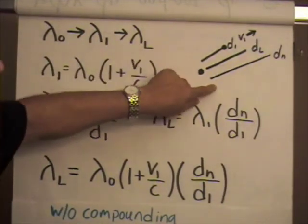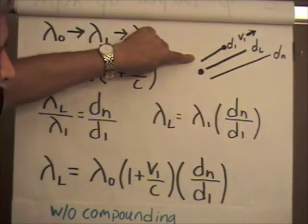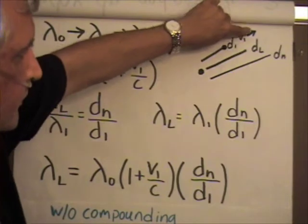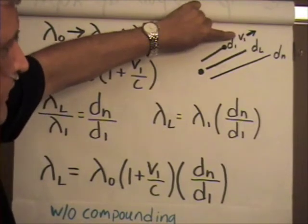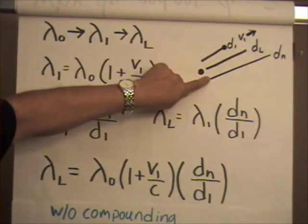Now here's a little reminder of our basic diagram that shows the distance d1, the recessional velocity v1, the distance dL, and the distance dn.